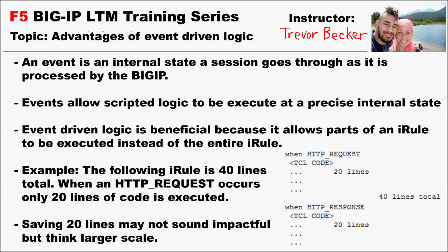If the entire iRule, for example, is 40 lines long, but with multiple events inside of it, only the code block associated to the event that occurred is executed, versus the entire script in the iRule running. For example, let's say an iRule existed on a production VIP, and inside of it said 'when HTTP_REQUEST', and whenever this event occurred, 20 lines of Tcl code would run. And then 'when HTTP_RESPONSE' occurred, 20 lines of Tcl code would also occur. The entire iRule is 40 lines of code, however only 20 lines will be executed whenever an HTTP request or an HTTP response occurs.